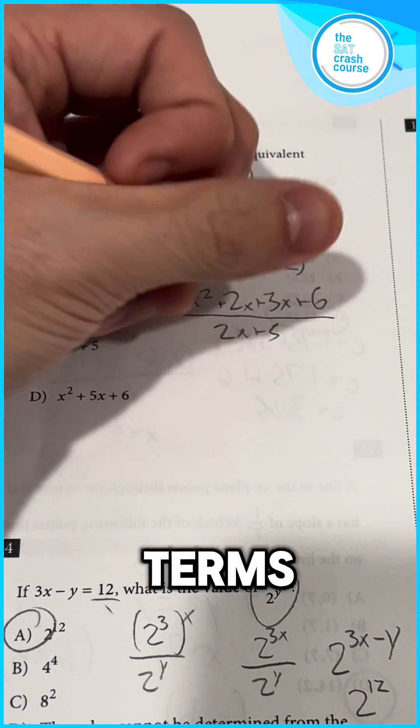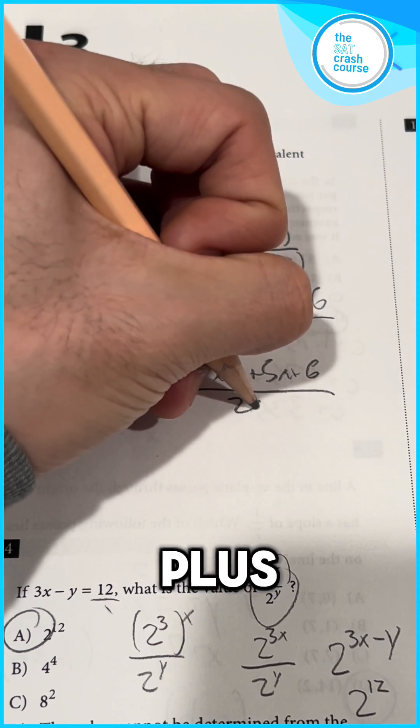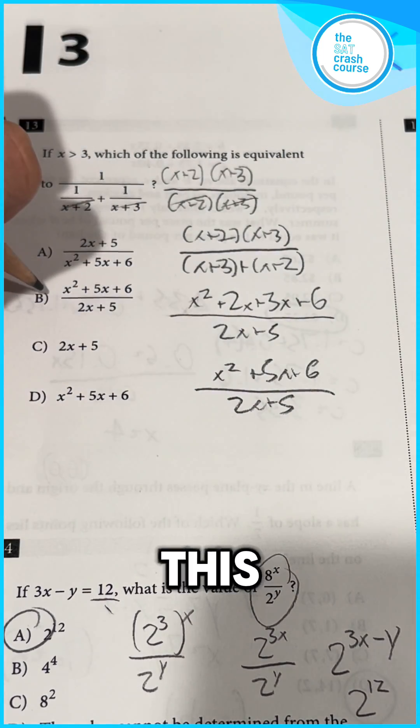Combining like terms on the top, we get x squared plus 5x plus 6 over 2x plus 5. This is answer choice B.